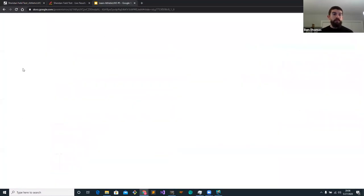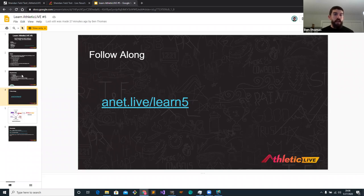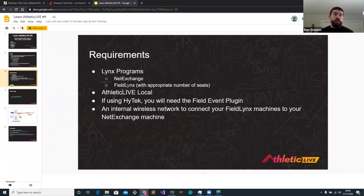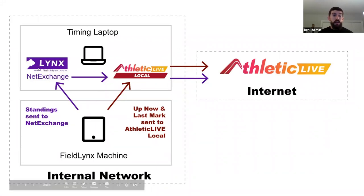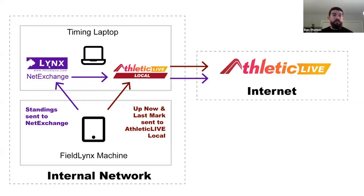Let's take a brief overview of how Net Exchange, Athletic Live Local, and Field Links all need to send and receive data from one another. On your internal network you'll have all your Field Links machines and your timing laptop with Net Exchange on it — that laptop could have both Net Exchange and Athletic Live Local. The Field Links machine does two things: after every mark, it sends standings to Net Exchange, and then Athletic Live Local sees there are new standings available and sends them online to Athletic Live on the internet. After every mark, or whenever you select a person, it will denote who is up now and what the last mark is.